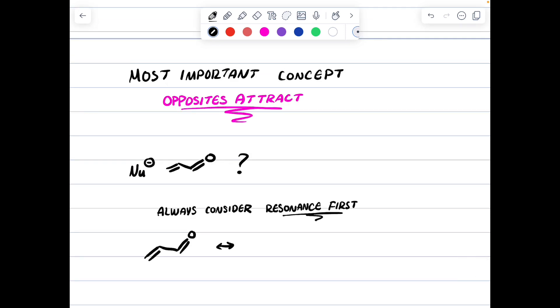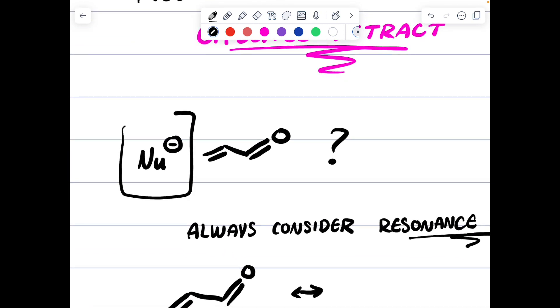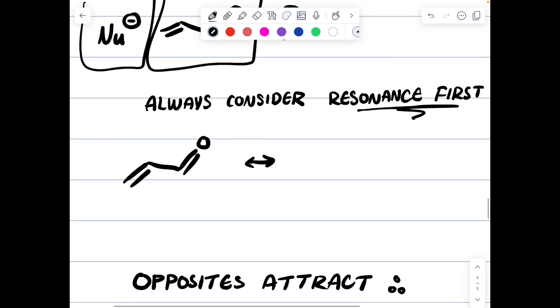Next concept, opposites attract. What does this mean? Well, this means if you have some nucleophile that's negatively charged, I will make a whole other video going over nucleophiles and electrophiles. But for now, just consider that it's something. It could be a compound, an atom that has a negative charge localized on it. It likes positive charges. So for example, if this nucleophile seen this compound, what would happen? Well, first, you must always consider resonance.